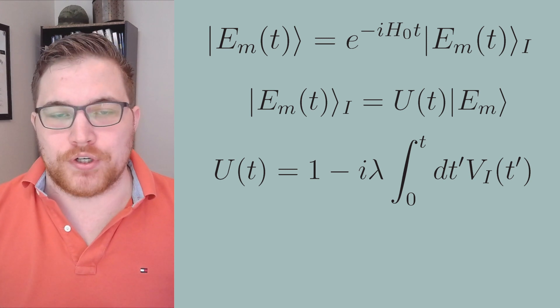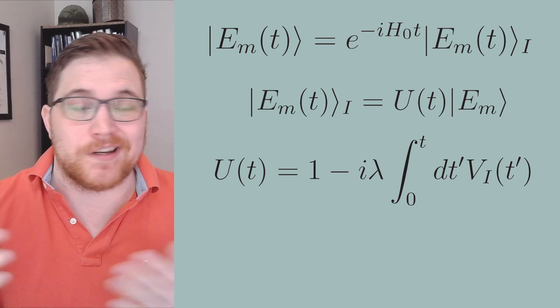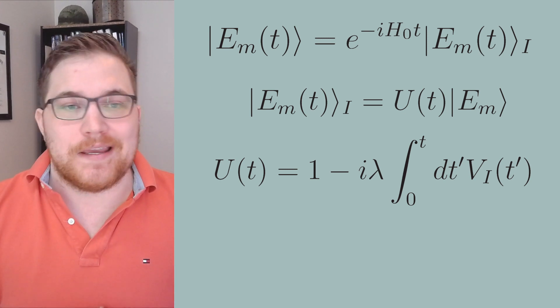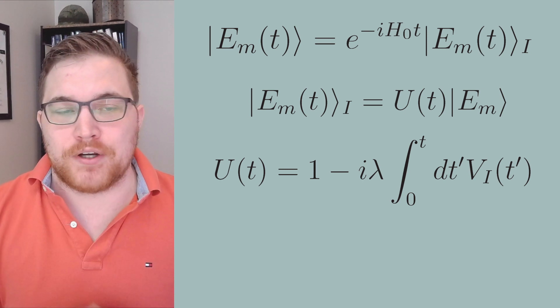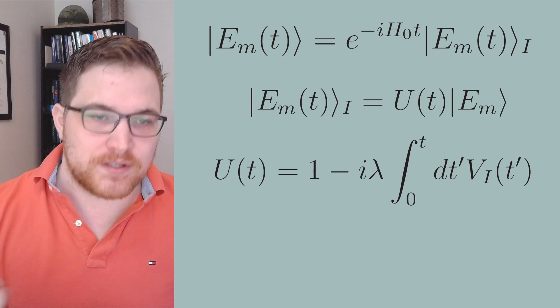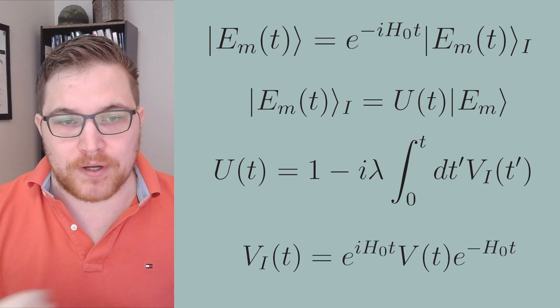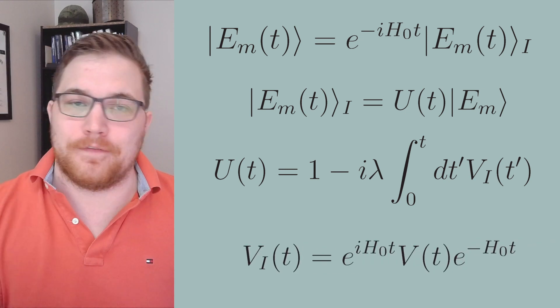So this gives us the following expression. So here the interacting portion of our Hamiltonian or our external perturbation v is given also in the interaction picture.